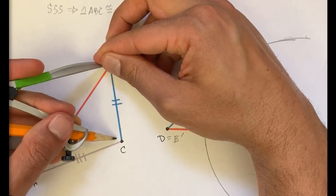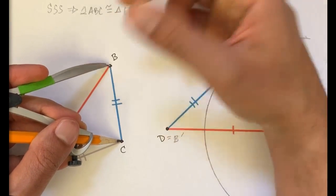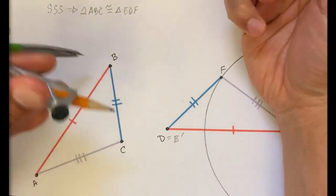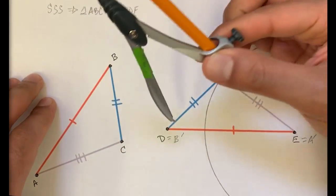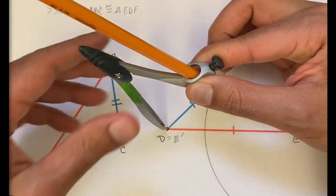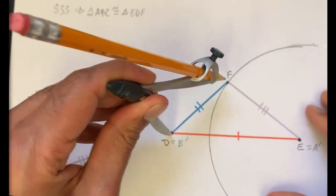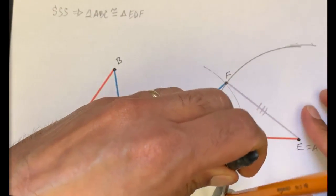But then we also know that C is this far from B. So let me adjust my compass again. C is that far from B. And so if B is mapped to this point, this is where B prime is, then C prime, where C is mapped, is going to be someplace along this curve.